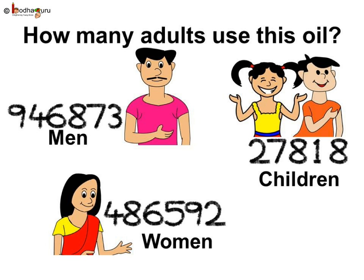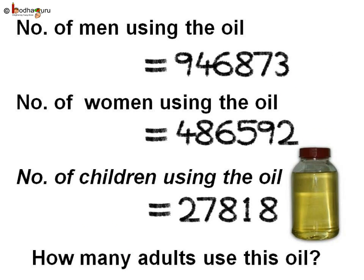Coming to the last problem. A particular brand of hair oil is used by 9,46,873 men, 4,86,592 women, and 27,818 children. What is the total number of adults who use that oil? Let us write down what all we know. Number of men who use that oil is equal to 9,46,873. Number of women using that oil is 4,86,592 and number of children using the oil is equal to 27,818.